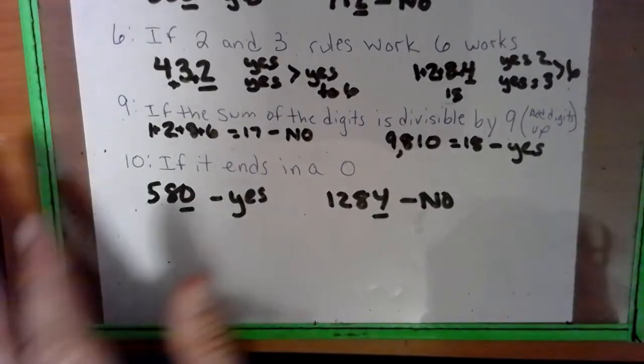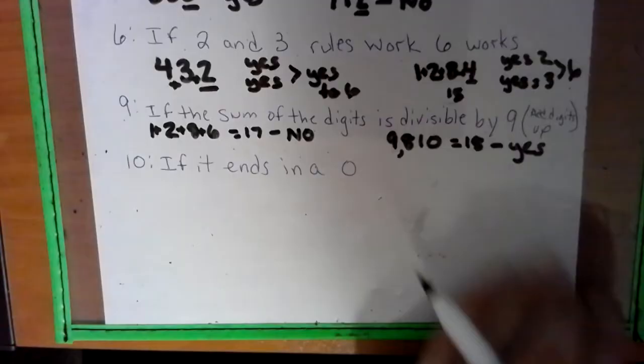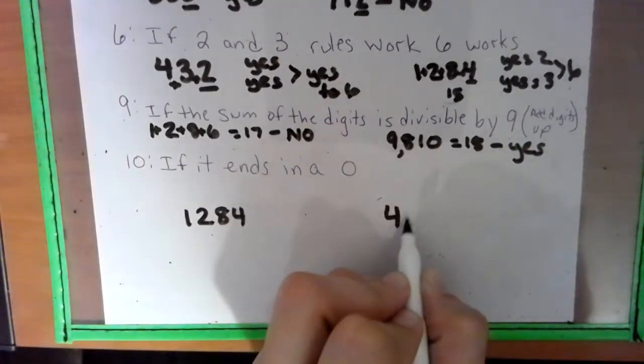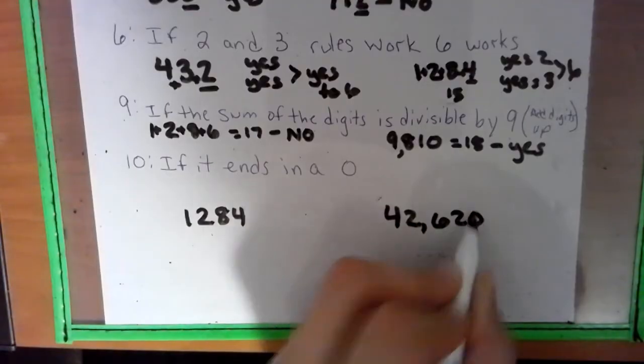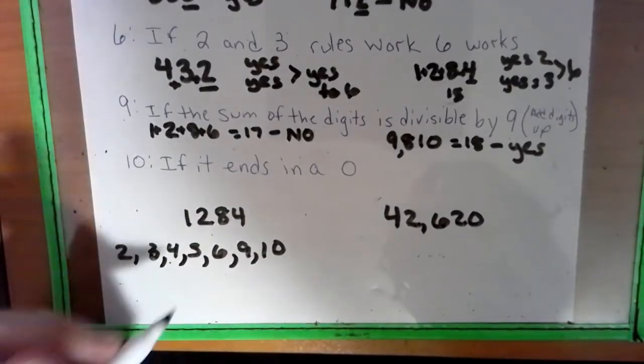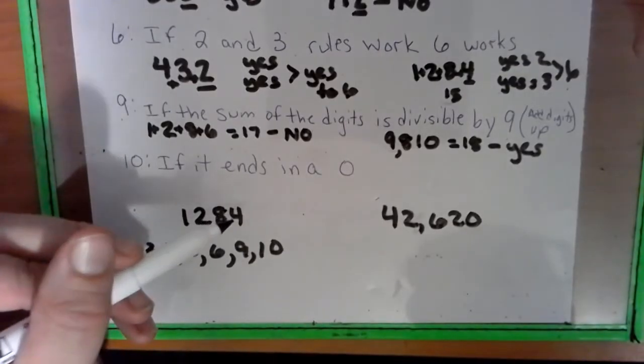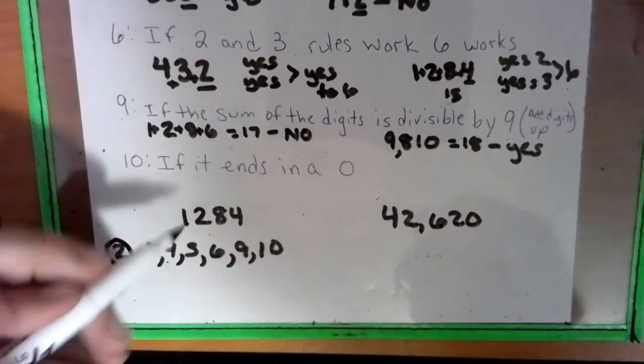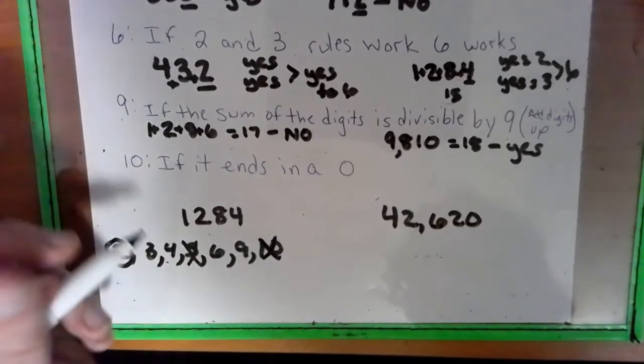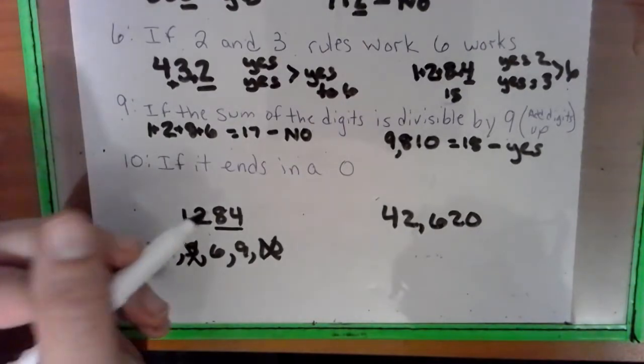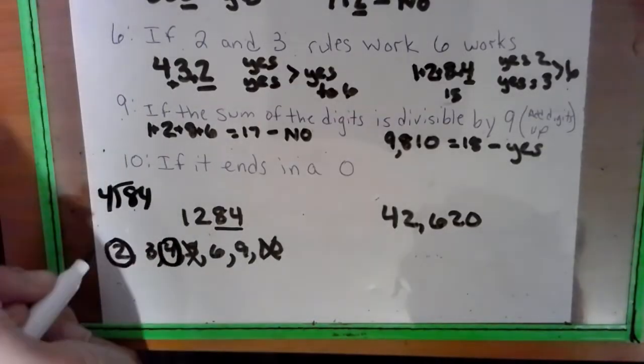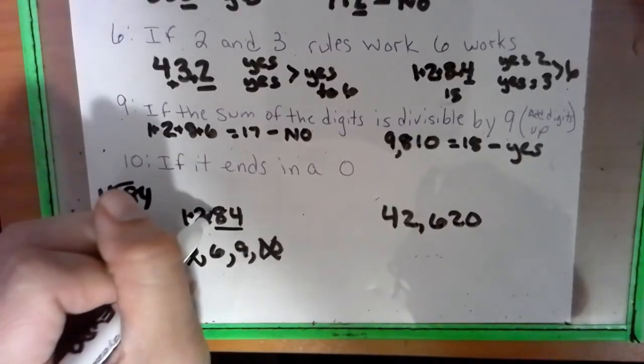So now we're going to try one that works for everything, or we're going to try all the rules. We're just going to pull the number 1,284, and then we're going to work with 42,620. And underneath I'm going to write all the rules in a row, and then if it works I'm going to circle it. This number is divisible by 2 because it's an even number. It is not divisible by 5 because it doesn't end in a 5 or a 0. It is not divisible by 10. Let's check the 4s rule. 84. Can 4 go into 8? Yes, twice, no leftovers. Can 4 go into 4? Yes. 4 works.